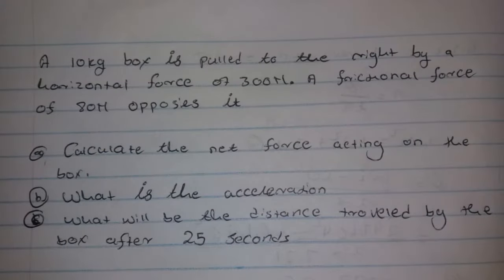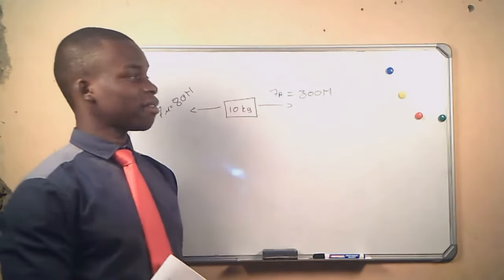A 10 kg box is pulled to the right by a horizontal force of 300 newtons. A frictional force of 80 newtons opposes it. We are given three questions: A) calculate the net force acting on the box, B) what is the acceleration, and C) what will be the distance travelled by the box after 25 seconds?